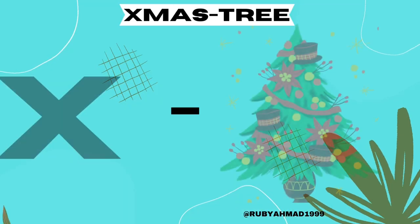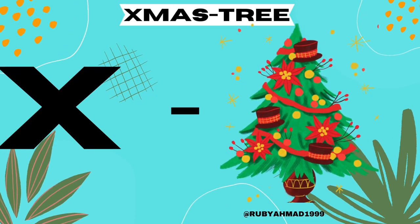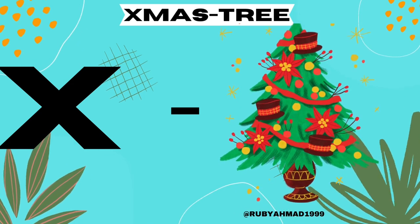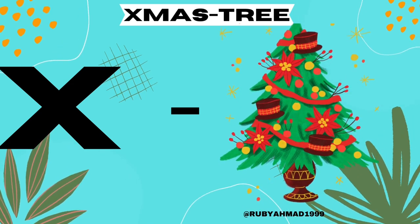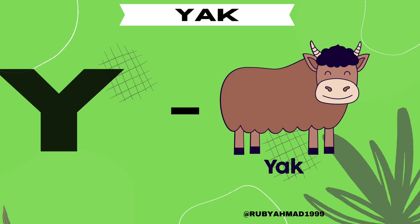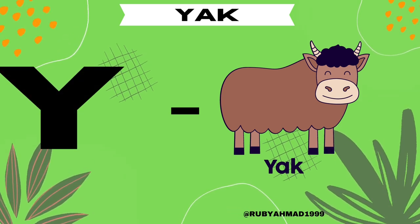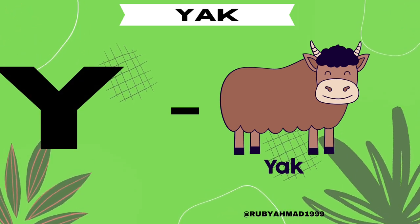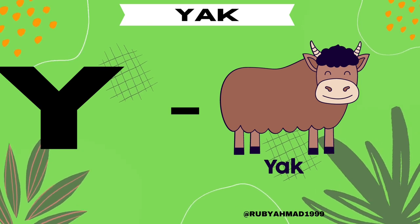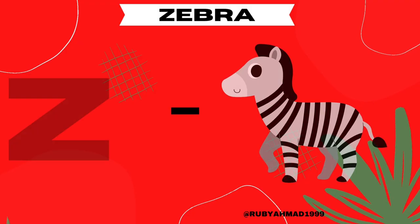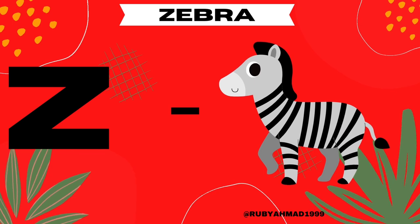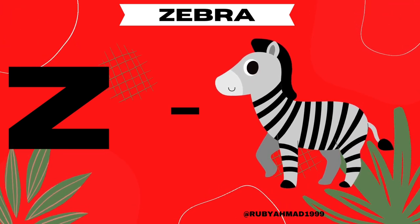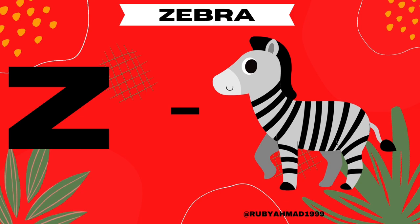X for X-mas tree. Y for yuck. Z for snake. Thank you.